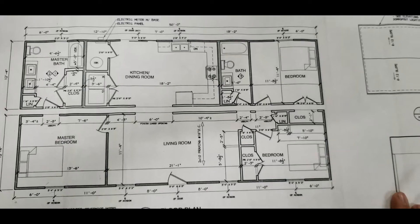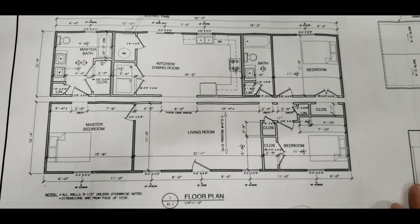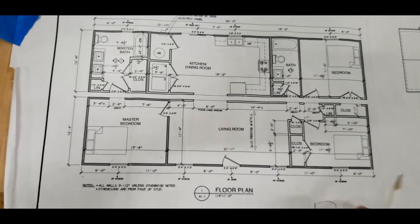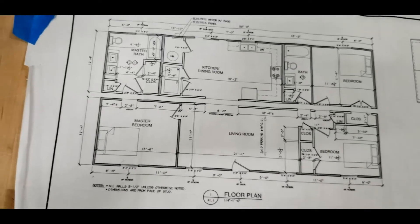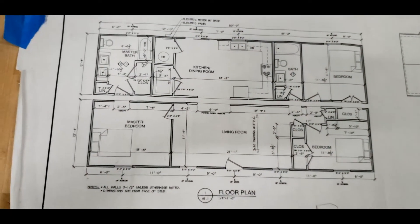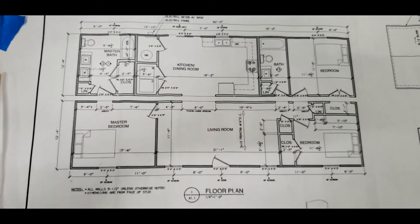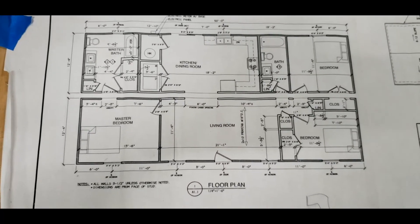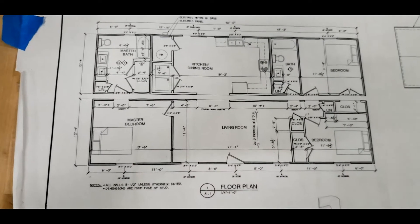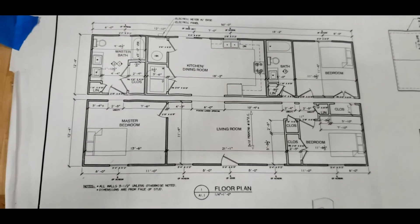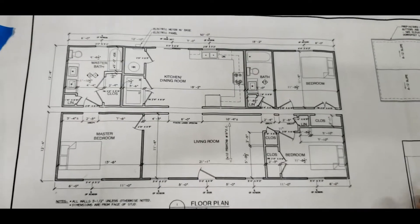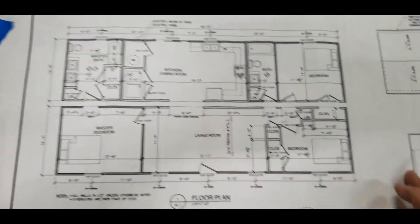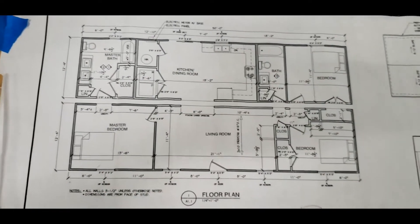Those are the basics of what you're looking at for your floor plan. When you're trying to figure everything out, the first thing you want to do is get your overall big outside dimensions and your walls. After that, you're going to figure out where your doors and windows are, and then other little details. Those are the things you're going to be looking for on your floor plan.